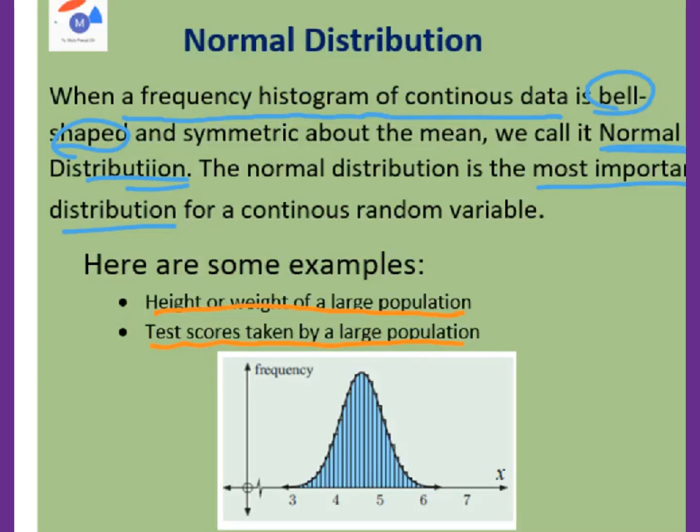This is a typical normal distribution graph. You could see this is bell-shaped. And this point will be mean, median, mode.